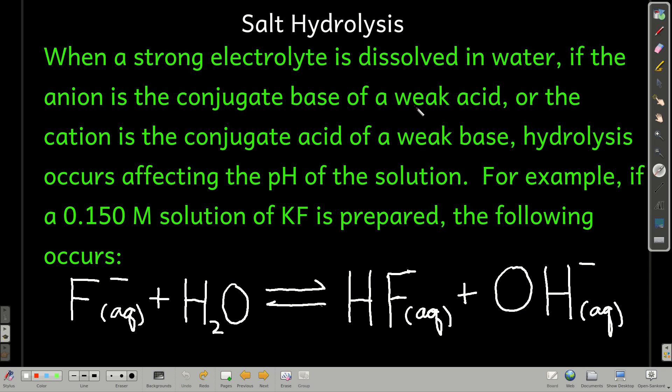Hydrolysis means breaking a part of water. And what happens is if the anion of the ionic compound is the conjugate base of a weak acid, then it's going to act as a base in water and accept a proton from water. For example, let's say we made a 0.150 molar solution of potassium fluoride. The fluoride ion will react with water, accept a proton forming the hydrofluoric acid molecule and hydroxide. The hydroxide is what changes the pH of the solution compared to what it was before we put the salt in.